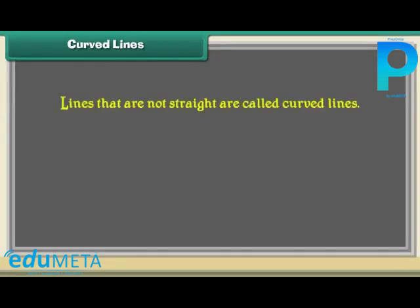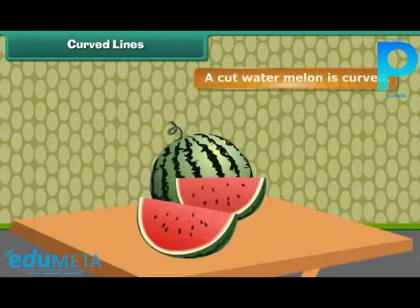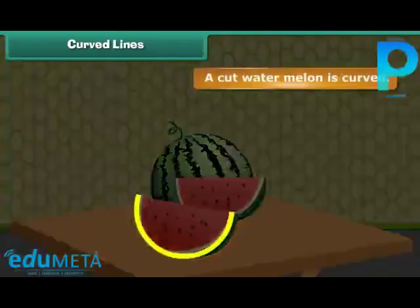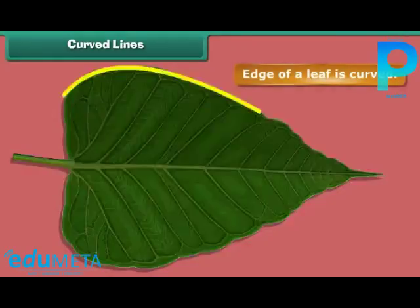Curved lines: lines that are not straight are called curved lines. For example, a cut watermelon is curved, and the edge of a leaf is curved.